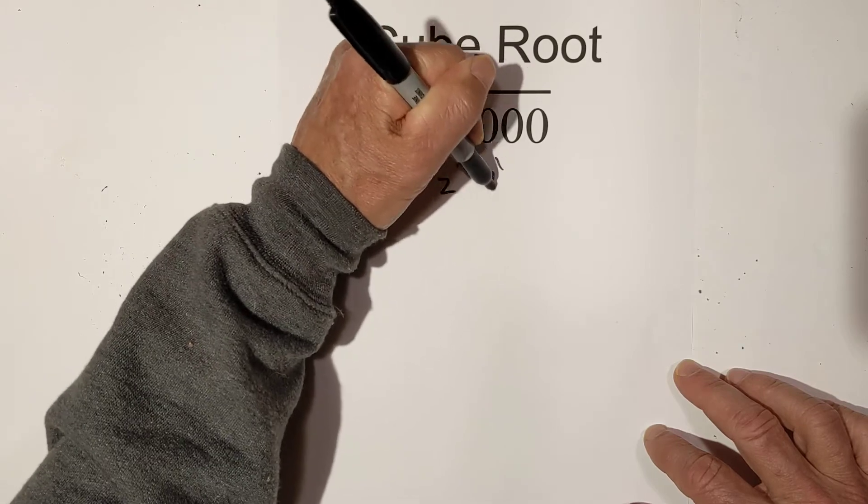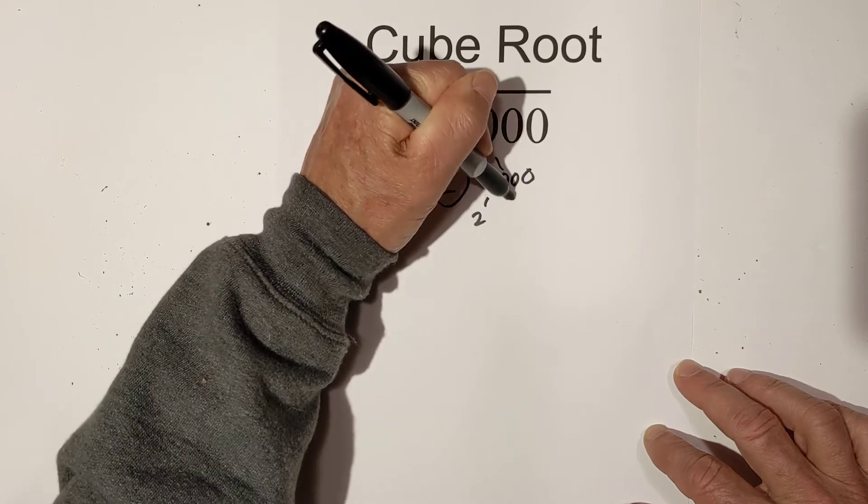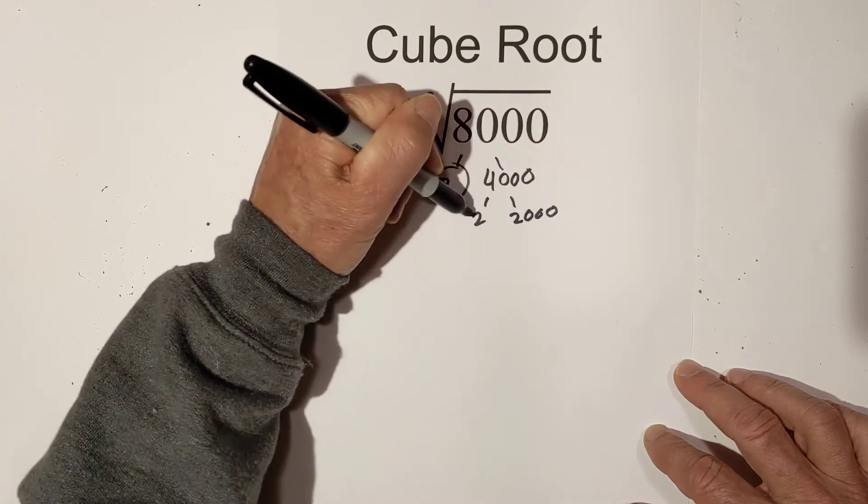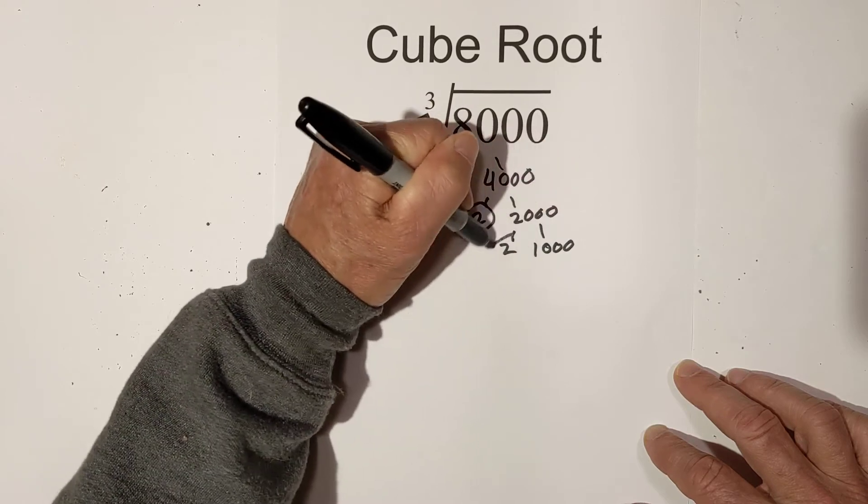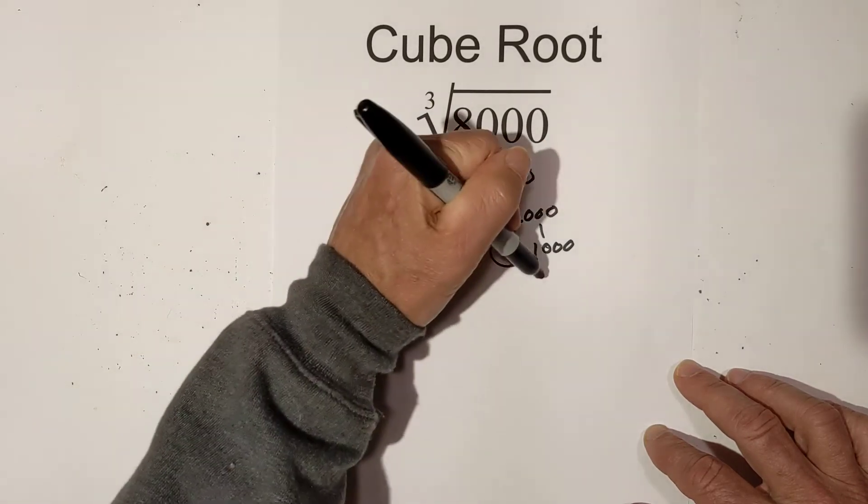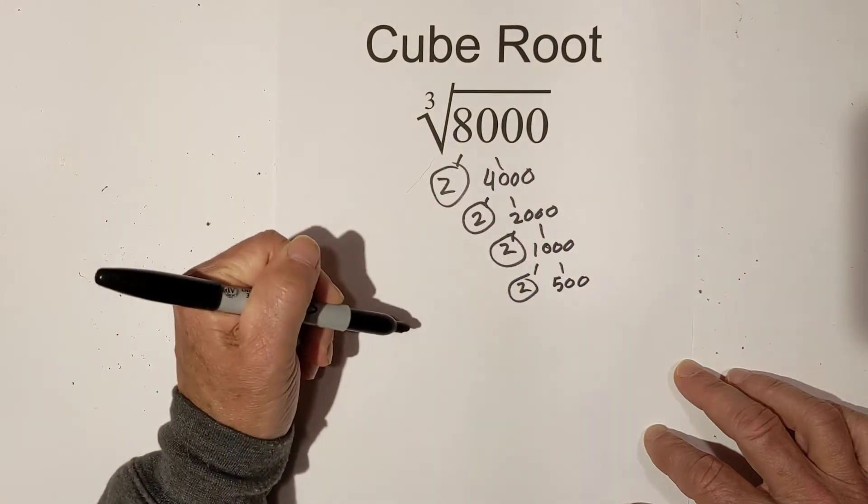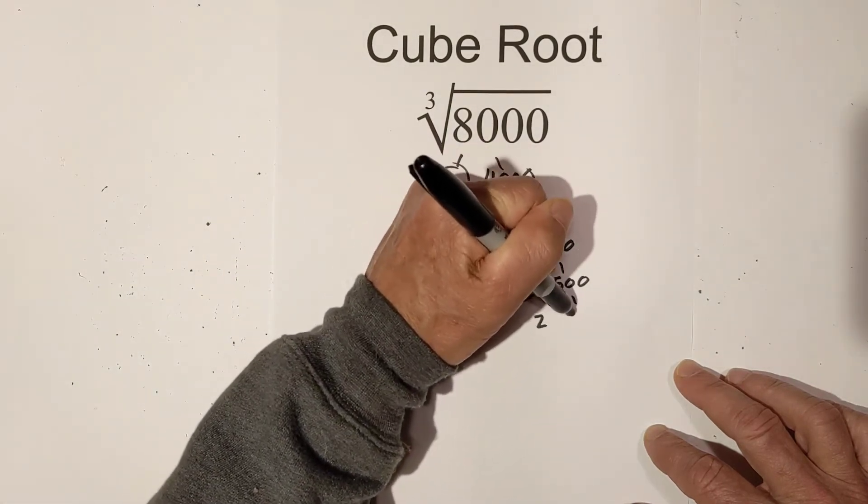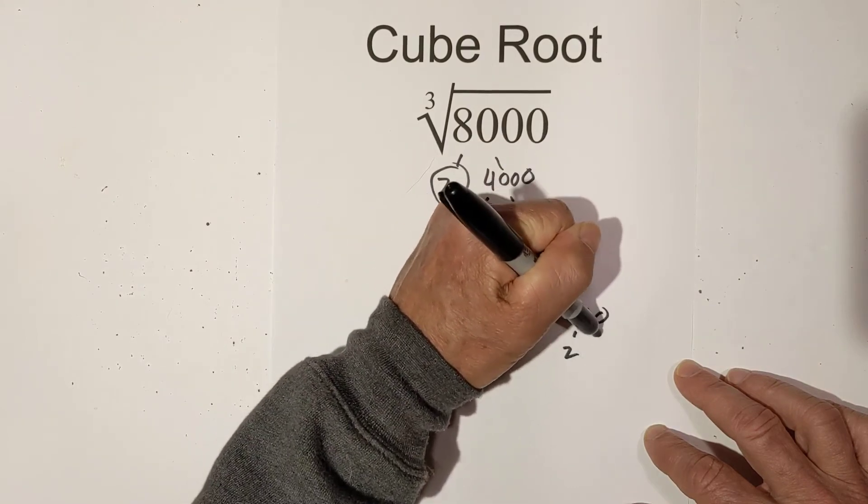So you have 2 times 4,000, circle the 2 because it is prime. Now 2 times 2,000, circle the 2. 2 times 1,000, circle the 2. Now we are down to 2 times 500. Let's try 2 times 250 and now 2 times 125.